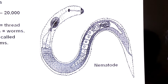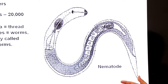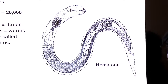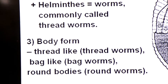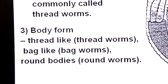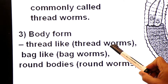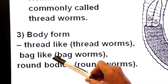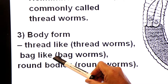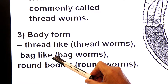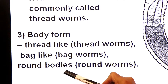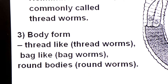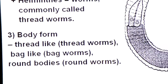Its body is thread like, that is why they are commonly called thread worms. Ascalminthes means 'bag worms' — 'ascus' means bag. Their body is round in shape, and due to the presence of round bodies they are also called round worms.